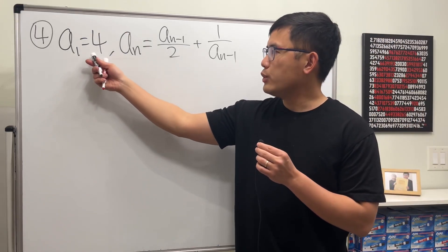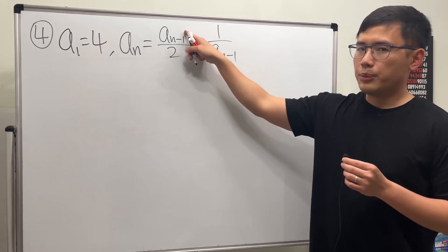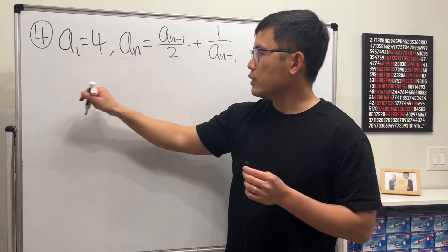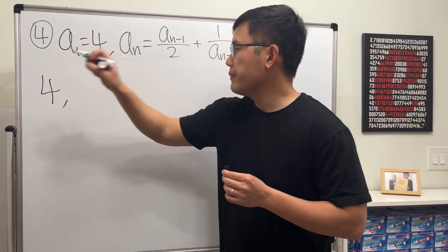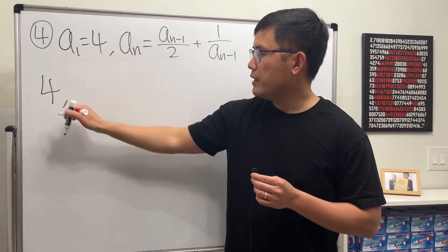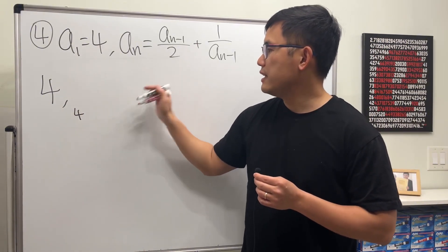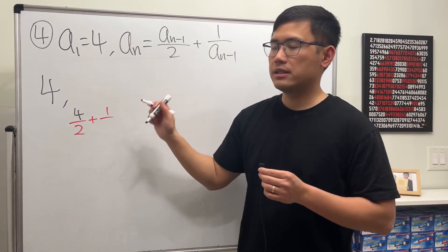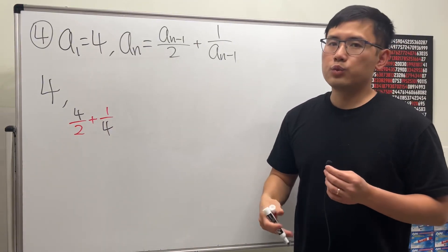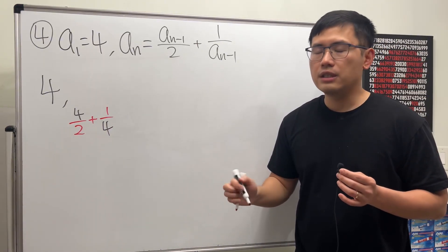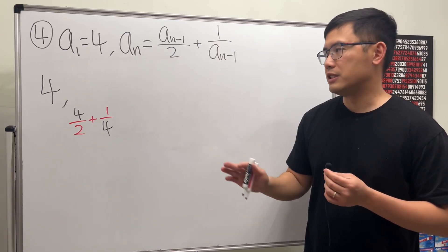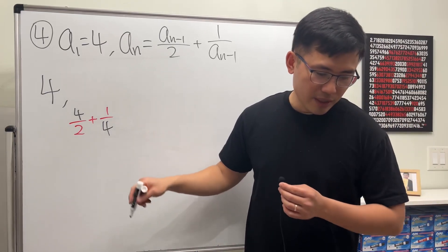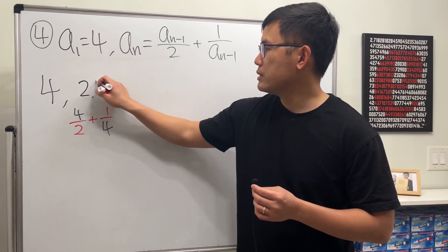Next, we have a1 is equal to 4, and an equals the previous divided by 2 plus the reciprocal of the previous. Starting with the first term, which is 4: we do 4 divided by 2, and then add 1 over 4. I recommend using decimals because you'll see there is a limit to the sequence. This gives 2.25.